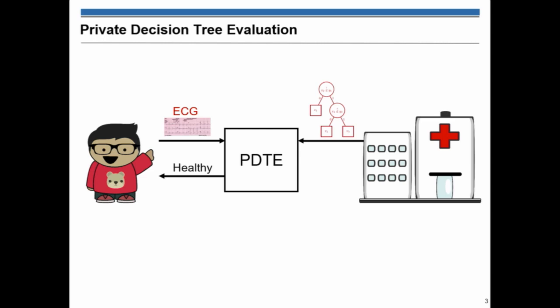Here we have this happy Bob, which wants to do a medical record and to see if it's healthy or not. But of course he doesn't want to reveal the ECG record to the hospital, and the hospital doesn't want to reveal the model because it's an asset to the hospital.